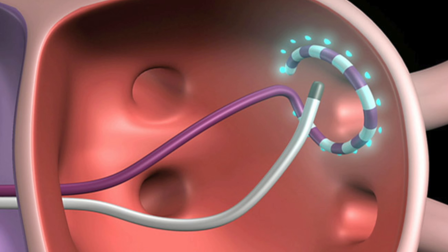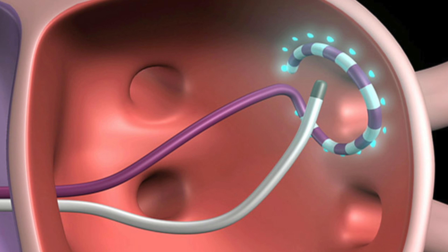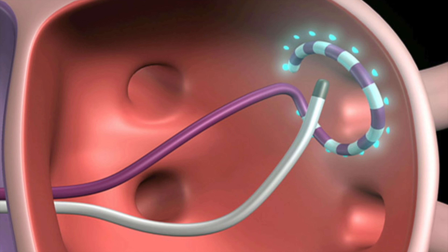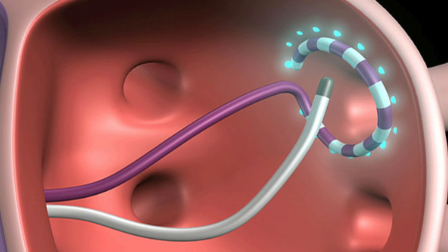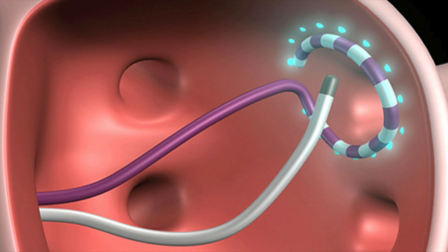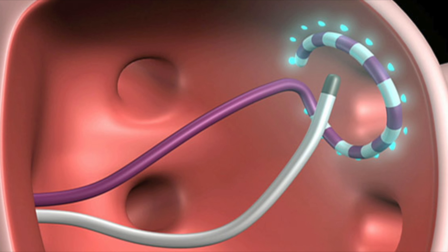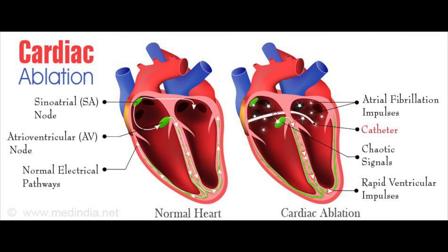If AFib doesn't improve with medications or other therapies, a doctor might recommend cardiac ablation. Cardiac ablation uses heat or extreme cold — cryoablation — to create scars in your heart to block abnormal electrical signals and restore a normal heartbeat. A doctor inserts a flexible tube or catheter through a blood vessel, usually in your groin, and into your heart. More than one catheter may be used, and sensors on the tip of the catheter apply the cold or heat energy.